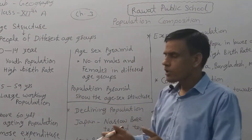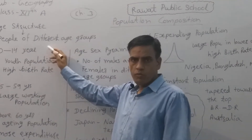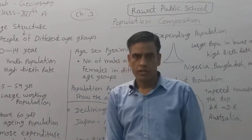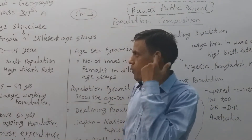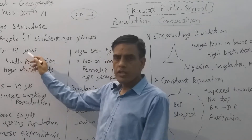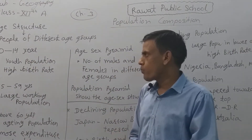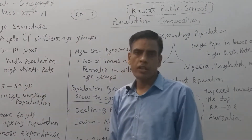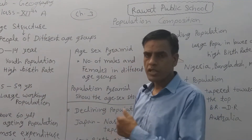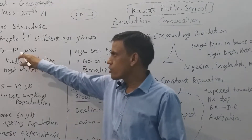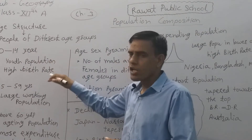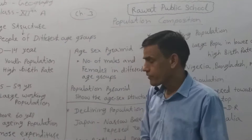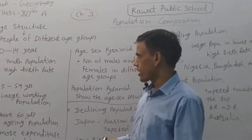There are three age groups of the entire population. The first is zero to fourteen years — the children or youth population. The youth population has a high birth rate. If the population of zero to fourteen years is large, it means the birth rate there is very high.